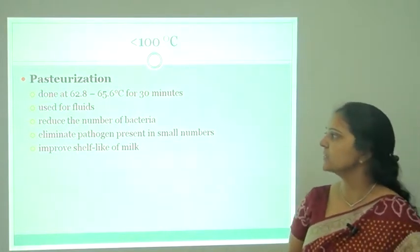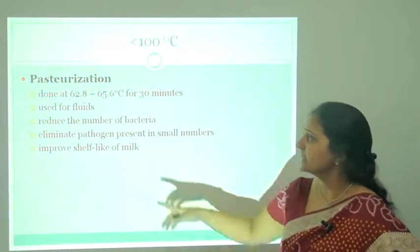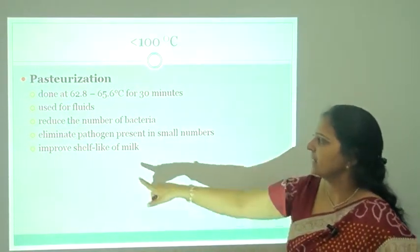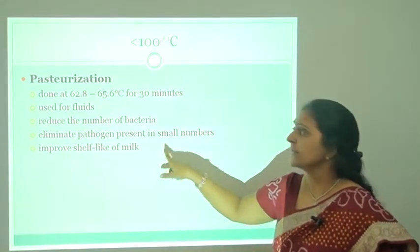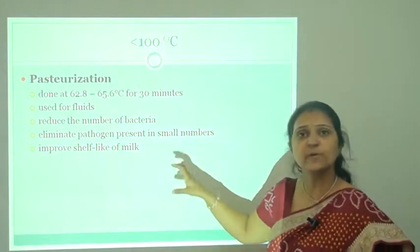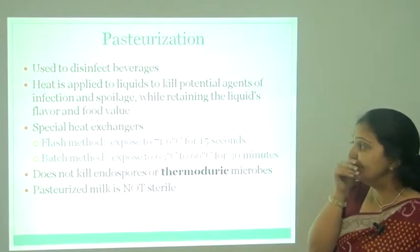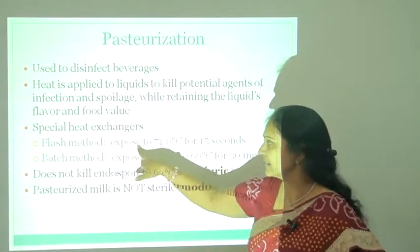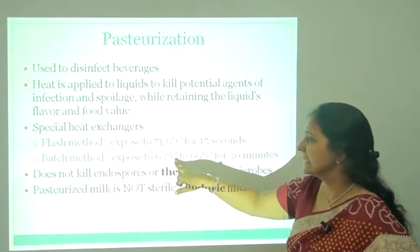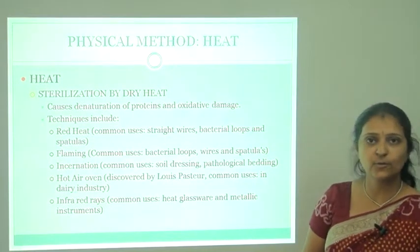Another technique for sterilization is pasteurization. It can be done at 62.8°C to 65.6°C for 30 minutes. It is used for fluids, reduces the number of bacteria, eliminates pathogens present in small numbers, and improves the shelf life of milk. It is not a sterilization method as it does not completely remove microorganisms, but is used for reduction of microbial growth and removal of pathogenic bacteria. The flash method exposes at 71.6°C for 15 seconds and the batch method at 63°C to 66°C for 30 minutes. Pasteurized milk is not known as sterile milk.